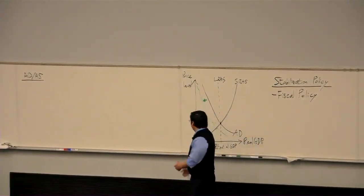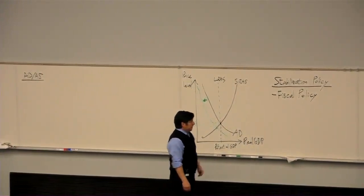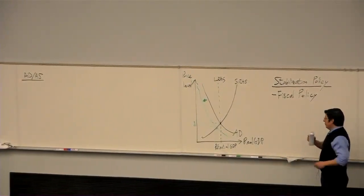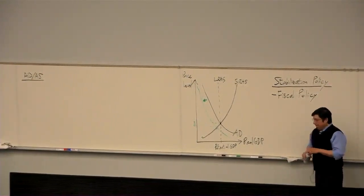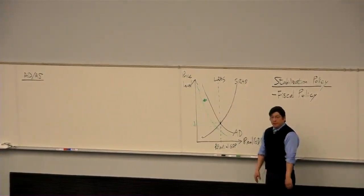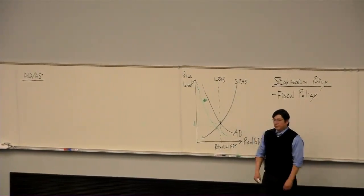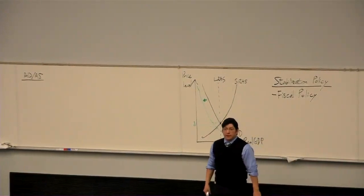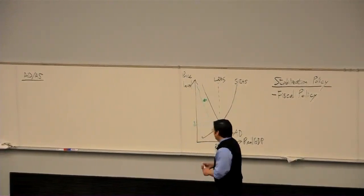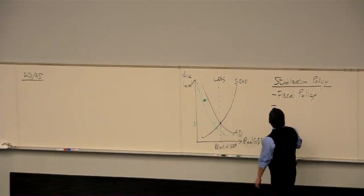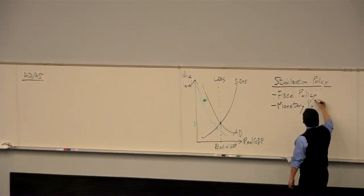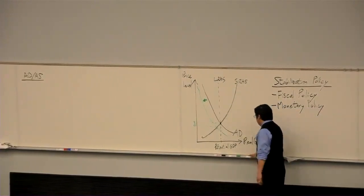We talked about various pros and cons of fiscal policy. We also saw that there were some downsides to fiscal policy, in particular the fact that it's slow. Fiscal policy, unless we're talking about automatic stabilizers, requires politicians who control the government to agree - and that's difficult to achieve. However, there is this alternative form of stabilization policy called monetary policy, and that is what we're going to talk about today.